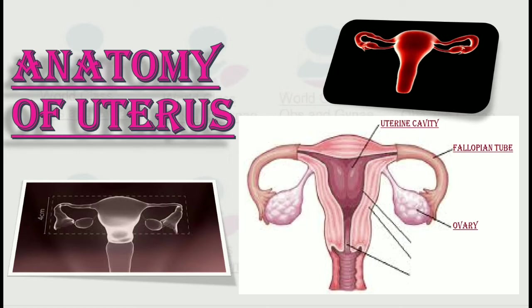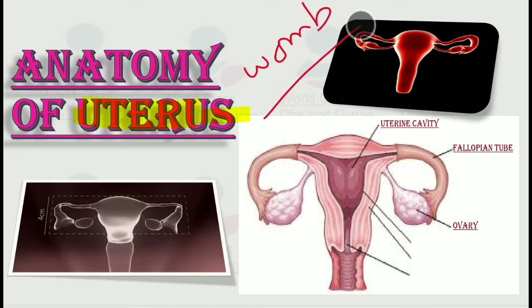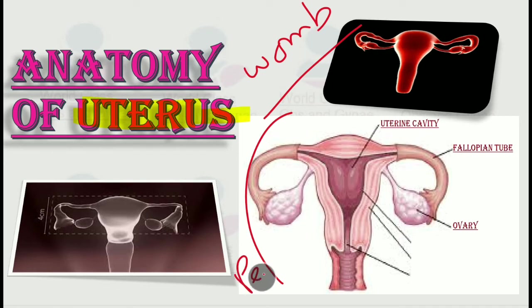Bismillahirrahmanirrahim. The topic of our discussion today is the anatomy of the uterus — a very important topic for all obstetricians and gynecologists. Basically, what is a uterus? Uterus is also called womb in layman terms, and the shape of the uterus is like an inverted pear.